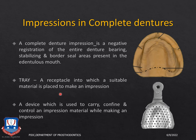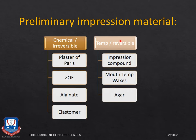An impression tray is a receptacle into which a suitable material is placed to make an impression. An impression tray may be a stock impression tray, which may be edentulous or dentulous, or it may be a custom-made impression tray used for making the secondary or final impression. An impression tray is also a device used to carry, confine, and control an impression material during impression making.